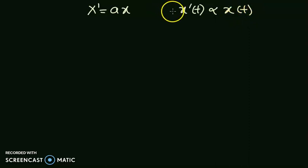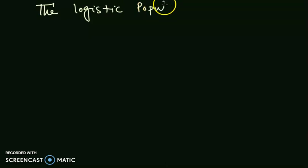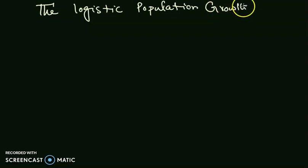This assumption was leading towards this differential equation, but this assumption is naive. We can't always have such behavior where the rate of change of population is directly proportional to the population at time t. We can have other scenarios. So we will generalize it a bit more, impose two more assumptions, and define something called the logistic population growth model.